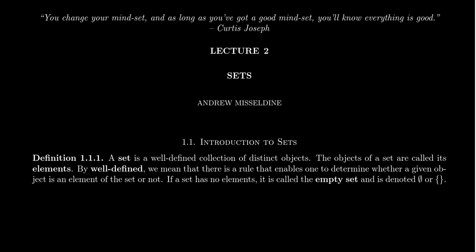I want to say something about what it means to be a well-defined collection. It turns out that not all collections are sets. In contrast to a set, there's something called a list, or a string, where the order of the elements matters — there's a first element, second element, third element. In a set, the elements are unordered. In a sequence, things could happen more than once. A set is not just any type of collection of things.